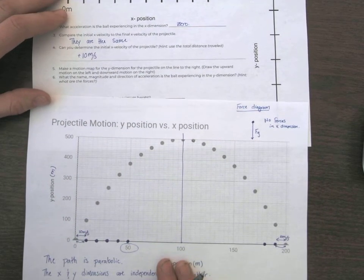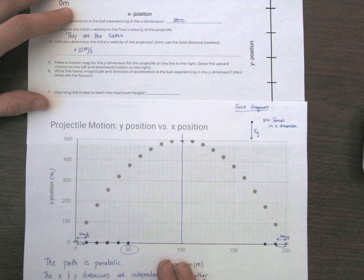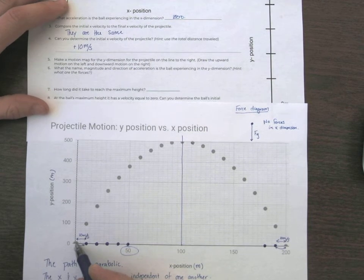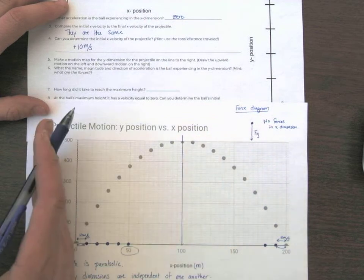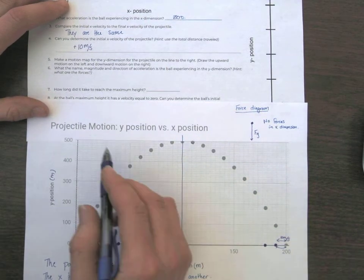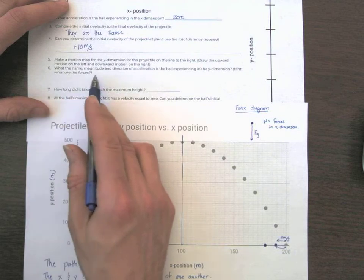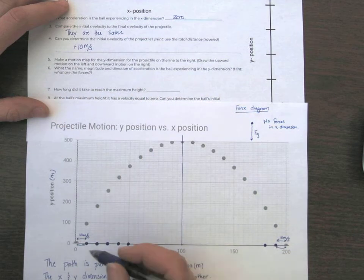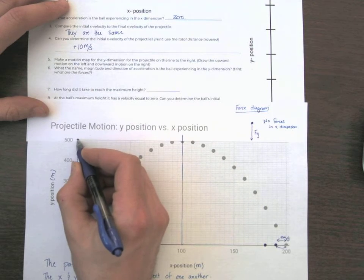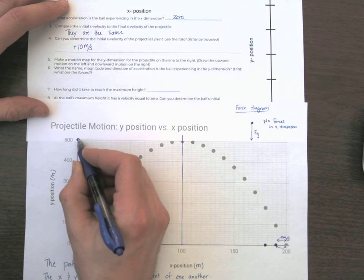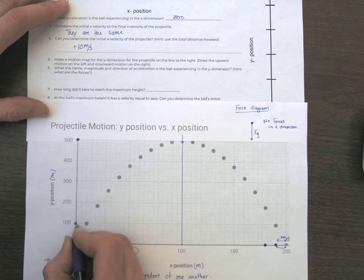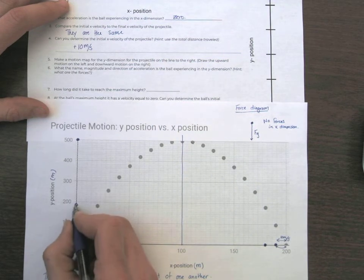So the next part's going to ask you to make a motion map in the Y dimension for the projectile. So it starts at a position of zero. And we're going to do the exact same thing. We're going to kind of bring over all of our dots to the Y axis. Okay, so our object gets up to a height of 500 meters, pretty darn high, in 10 seconds. So what we see is we can copy. I'll just do the upward ones here. So I'm copying these down here.